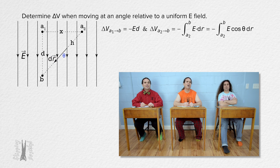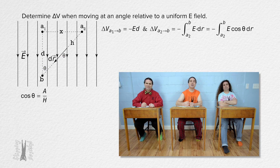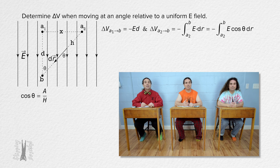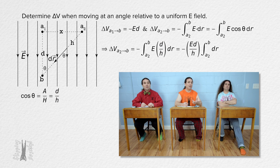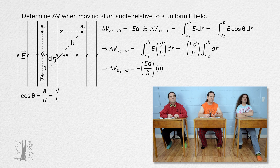That angle and the angle in the triangle by point b are alternate interior angles, so they have the same value. Cosine of an angle equals the length of the adjacent side over the length of the hypotenuse. Therefore, the cosine of this angle equals length d over length h. The electric field, distance d, and distance h are all constant values, so they can all be taken out from the integral. The integral from a2 to b with respect to position is just the distance from a2 to b, which is the distance h. h cancels out, and the electric potential difference between point a2 and point b equals the negative of the electric field times distance d.